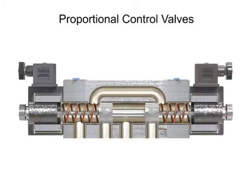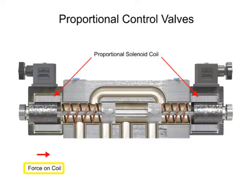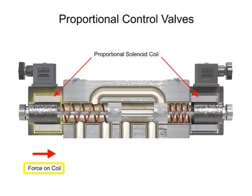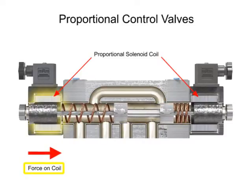The big difference is in the way their solenoid coils perform. Proportional coils operate on DC current and produce varying voltages that in turn produce a variable force to shift the spool.